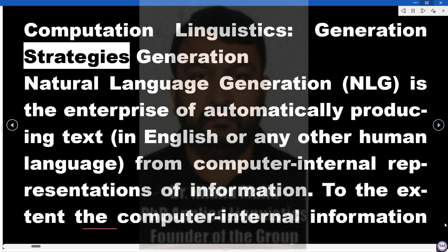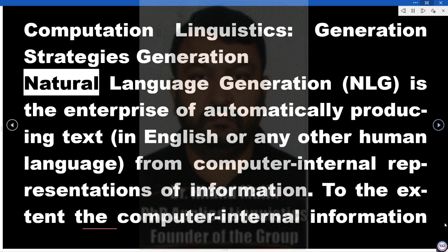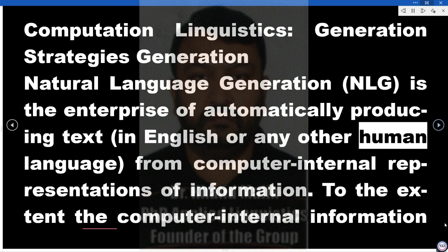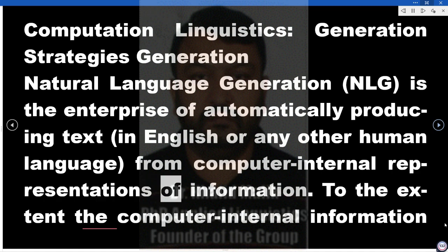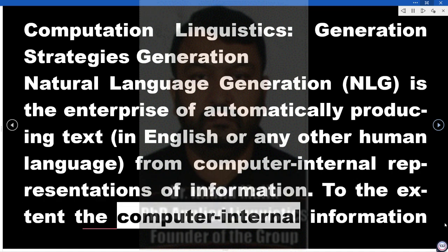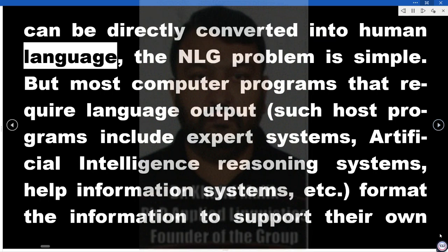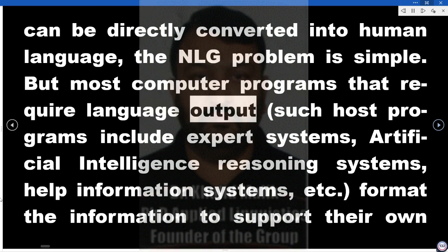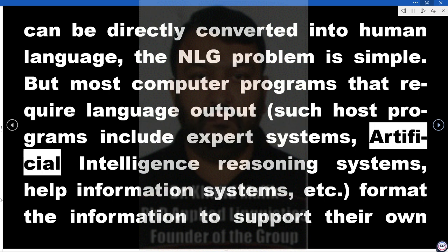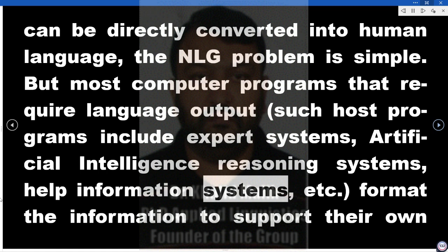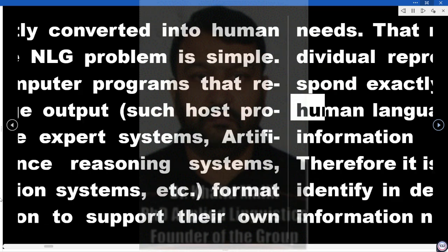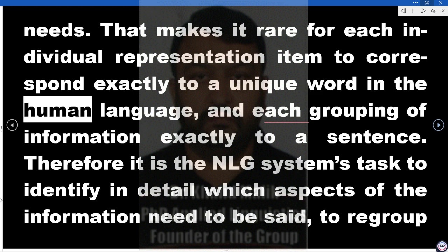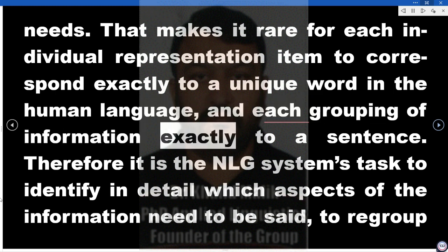Computational Linguistics: Generation Strategies. Natural Language Generation, NLG, is the enterprise of automatically producing text, in English or any other human language, from computer internal representations of information. To the extent that computer internal information can be directly converted into human language, the NLG problem is simple. But most computer programs that require language output — such as expert systems, artificial intelligence reasoning systems, help information systems, etc. — format the information to support their own needs, making it rare for each individual representation item to correspond exactly to a unique word in the human language, and each grouping of information exactly to a sentence.